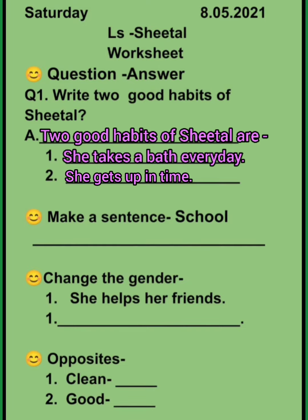Now the second work: make a sentence on the word 'school.' So you can write: I study in DAV public school; my school is big; I am missing my school; I keep my school neat and clean. So you have to write one sentence on your own.